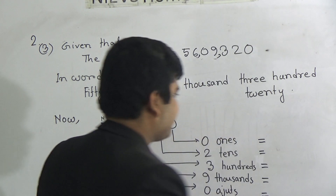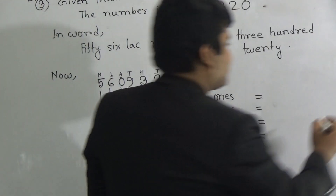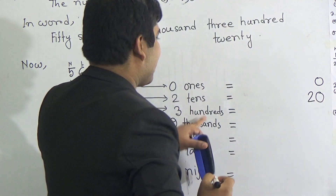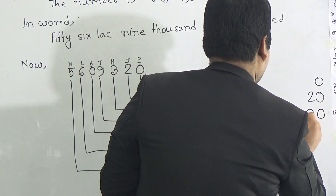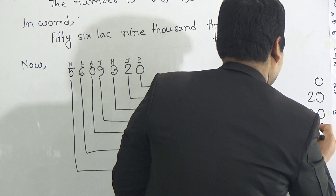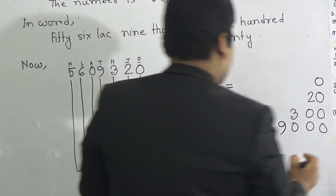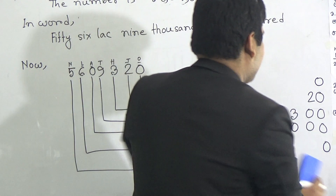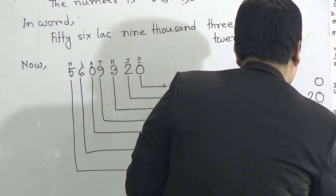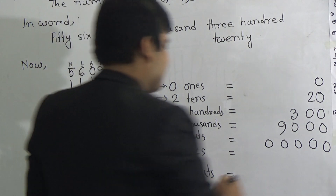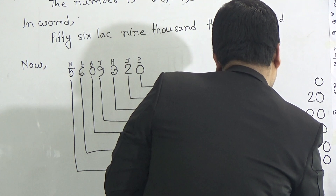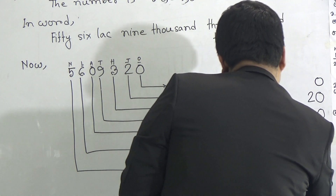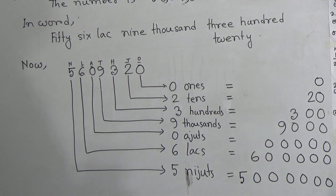Now my student, we write it this way. Zero ones — that means here we write 0. Then two tens — that means 20, so here we write 0 and 2. Then three hundreds — here 0, 0, and 3. Nine thousands — that means 0, 0, 0, 9. Then zero Ojut — that means 0, 0, 0, 0, 0. If you don't want to write five zeros, you can write just one zero — both are correct. Then six lakhs — that means 0, 0, 0, 0, 0, 0, and 6. Then five Nijut — that means 5, 0, 0, 0, 0, 0, 0. I hope you have understood this one.